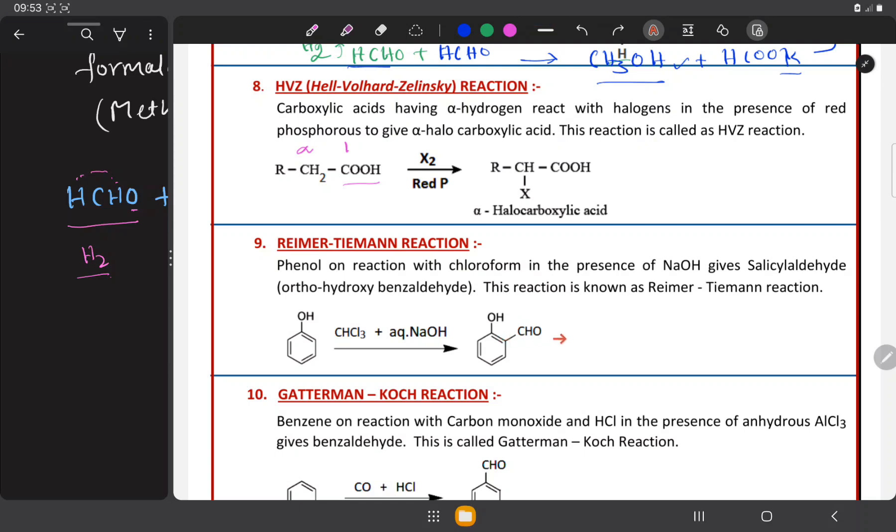In our previous videos, while we were discussing about Kolb's reaction, we have seen the formula of salicylic acid. Similar to that, here salicylaldehyde will be formed. This is benzene and this one is benzaldehyde. Benzene combines with aldehyde group. CHO is an aldehyde group. This is called benzaldehyde. In this benzaldehyde, if hydroxy group is substituted, hydroxy means OH group is substituted.